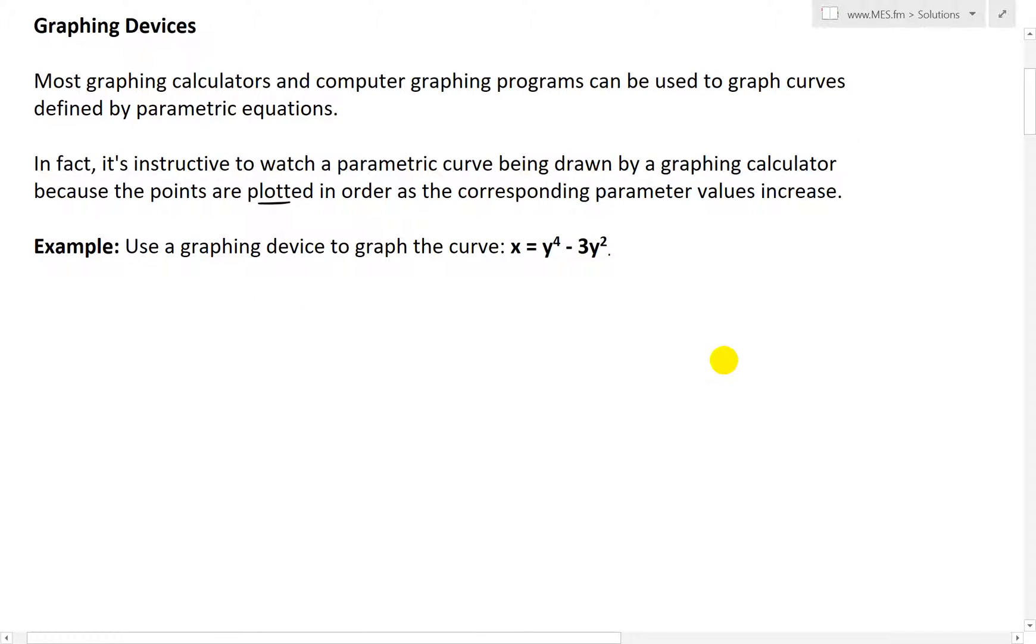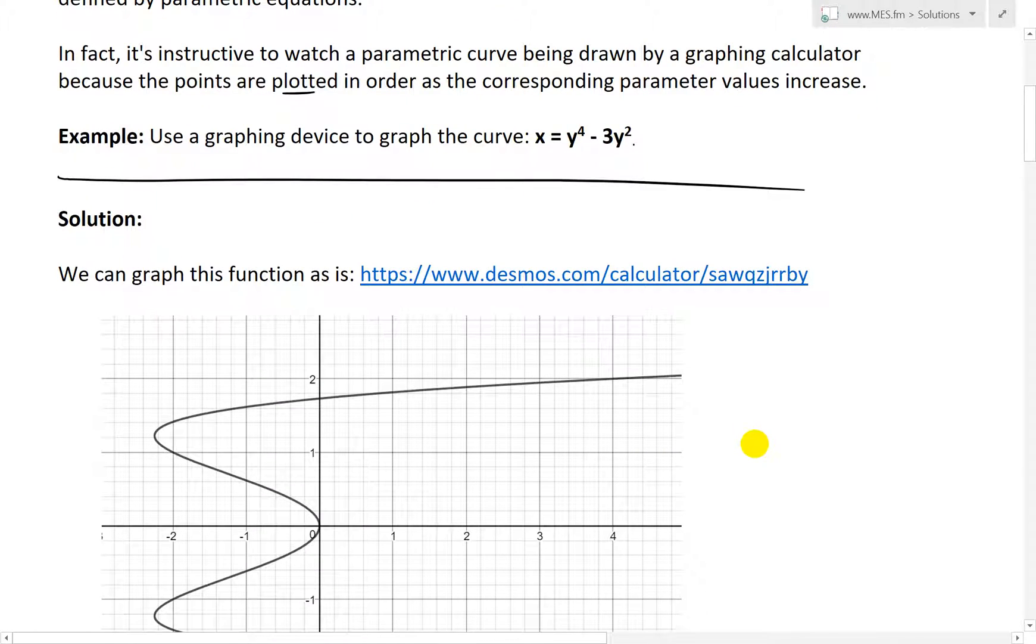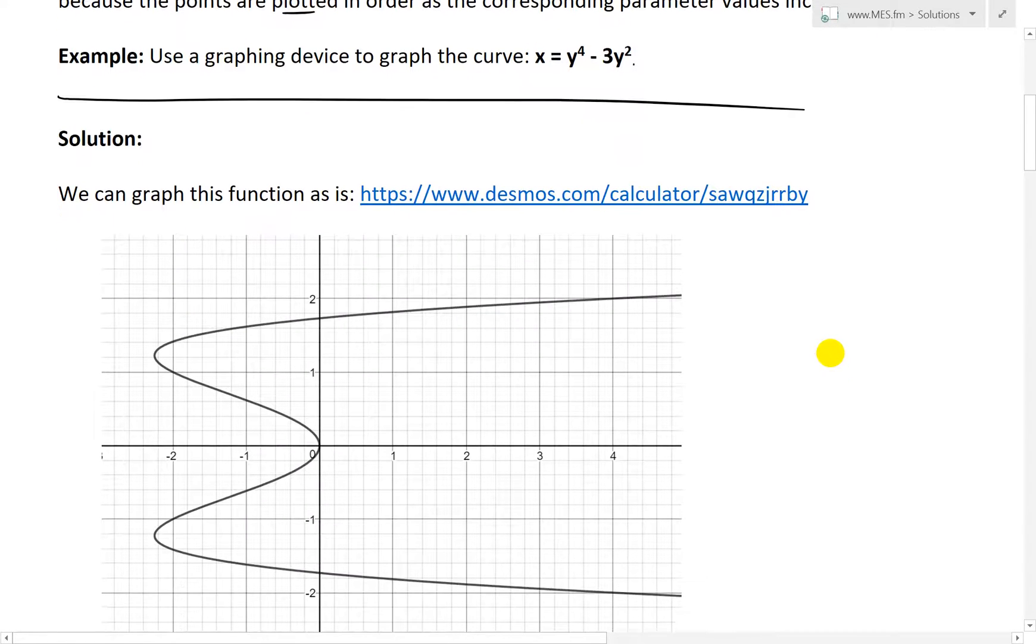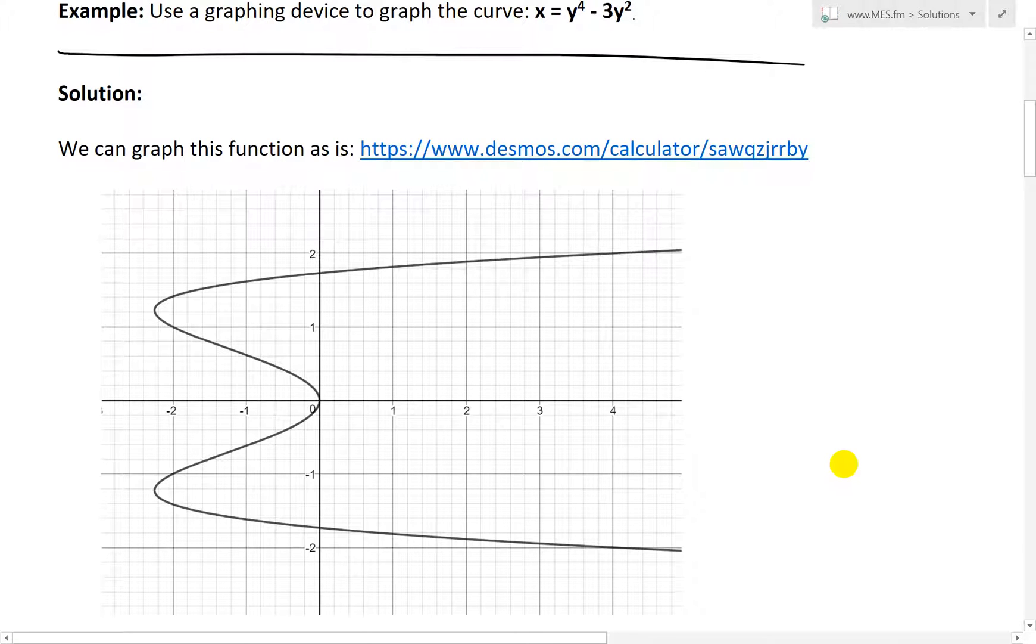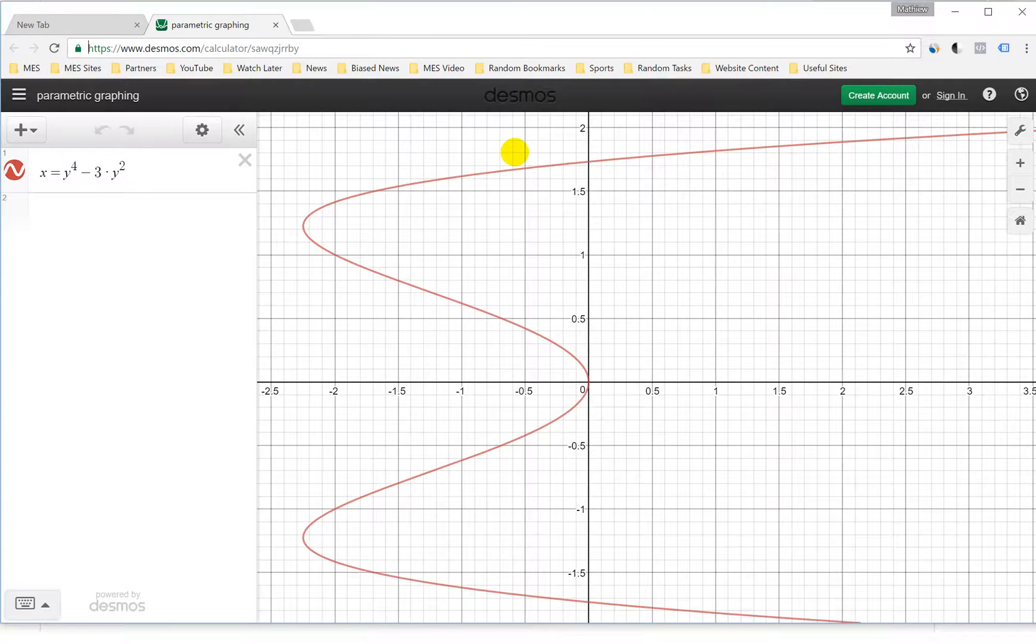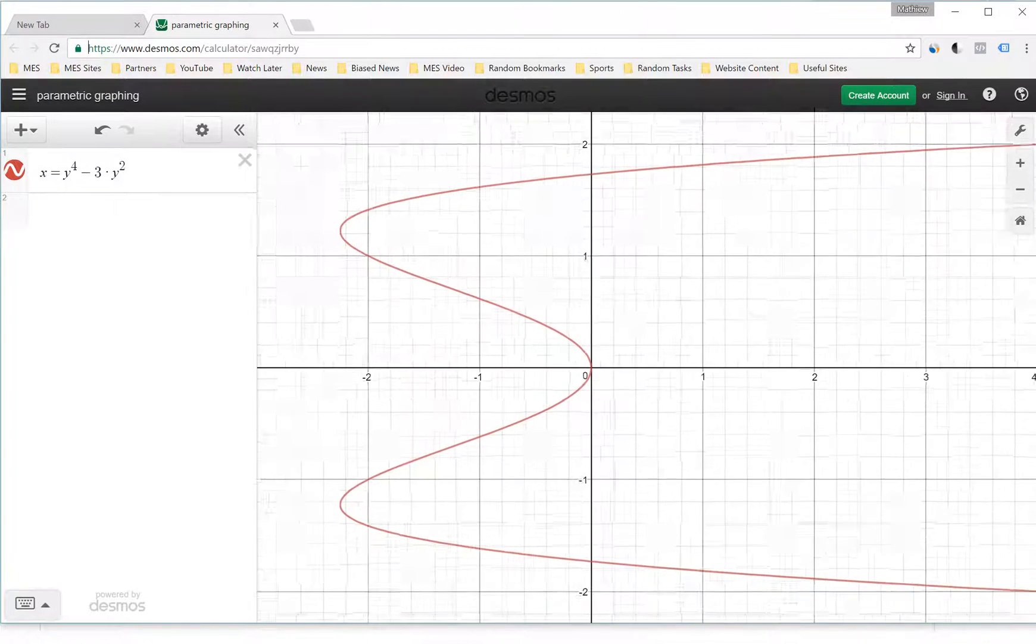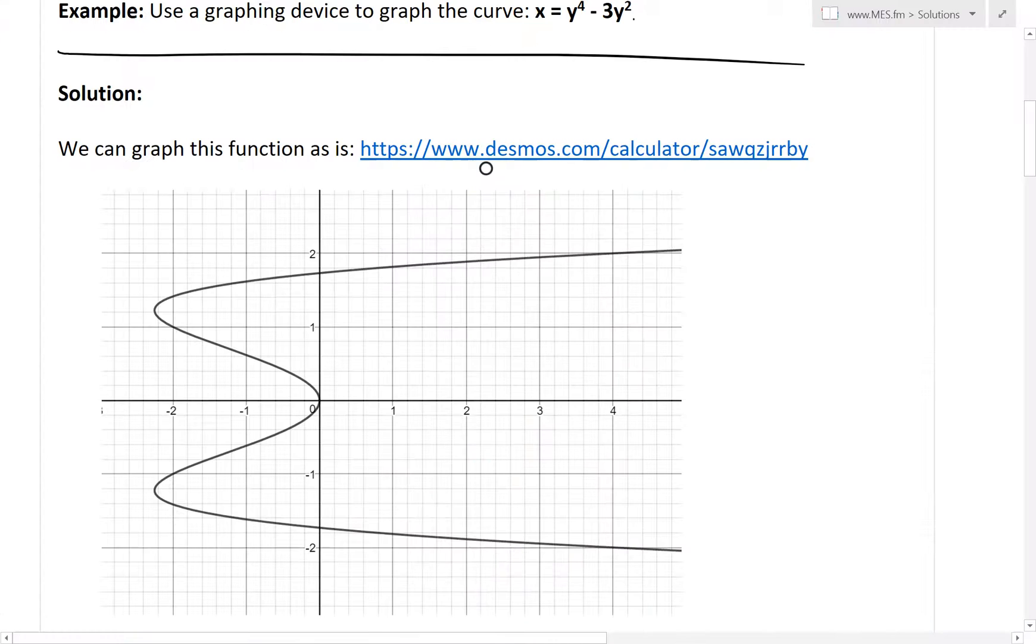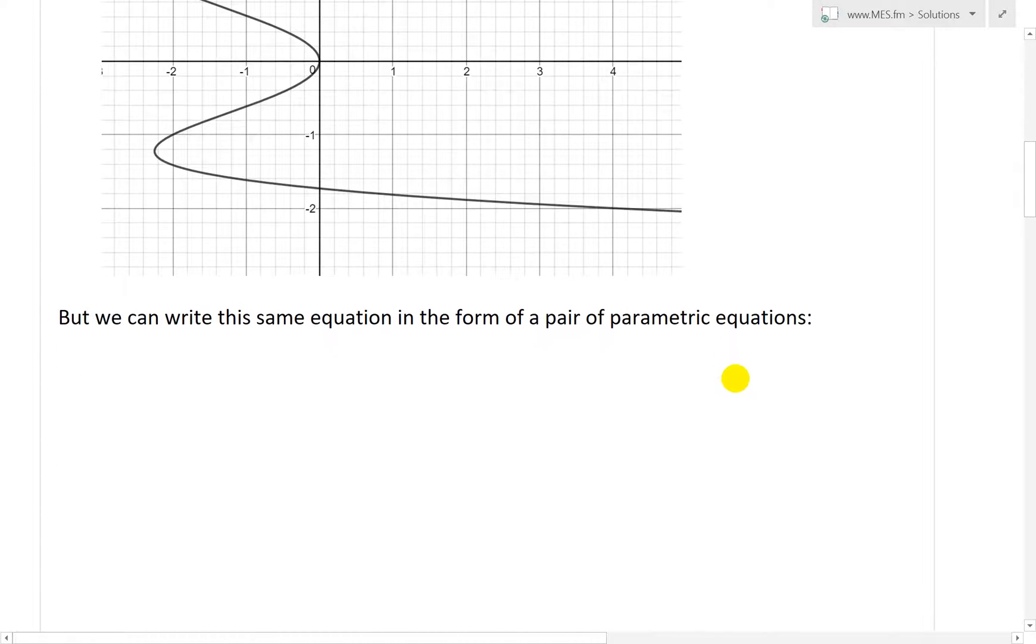Let's jump to the example. It states use a graphing device to graph the curve x equals y to the power of 4 minus 3 times y squared. What's interesting is we're not given the parametric equations, but that's not a problem. First, we can graph the solution as is and it looks like this. When you plot this out using this calculator, you'll get a shape that looks like a capital E.